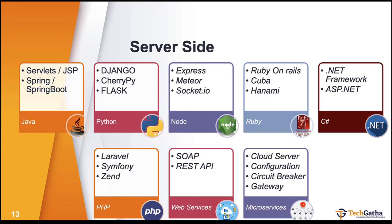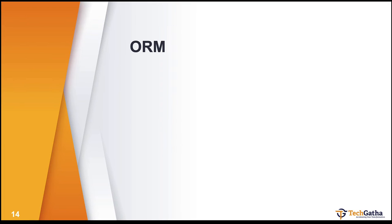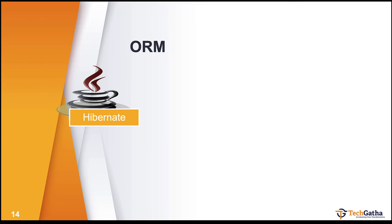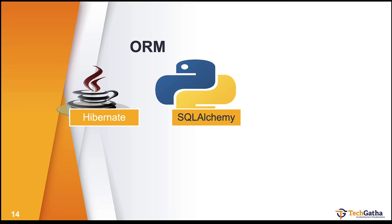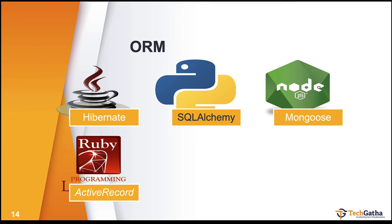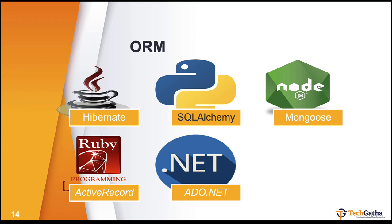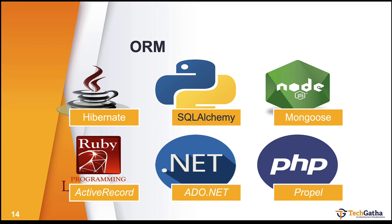Don't go with microservice architecture if you are not creating a complex application that needs to scale across geographical locations or handle lakhs of customer hits. But for complex applications, you should be aware of microservices. ORM frameworks are a wrapper around the queries you write to communicate with a database — Hibernate for Java, SQLAlchemy for Python, Mongoose for Node.js, Active Record for Ruby, ADO.NET for C#, and Propel for PHP.